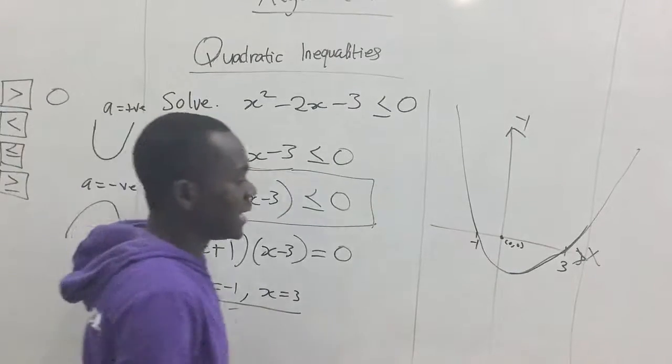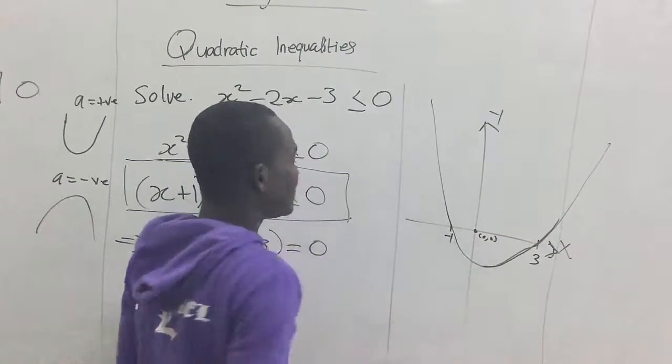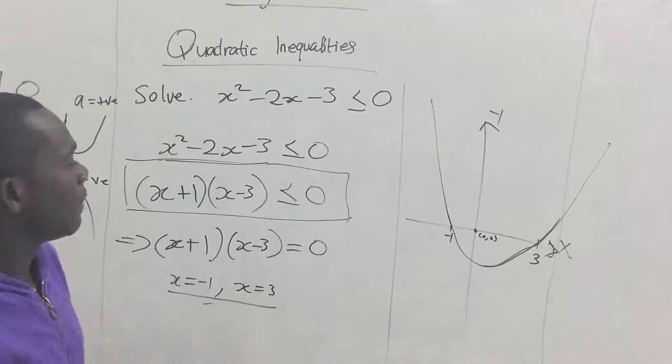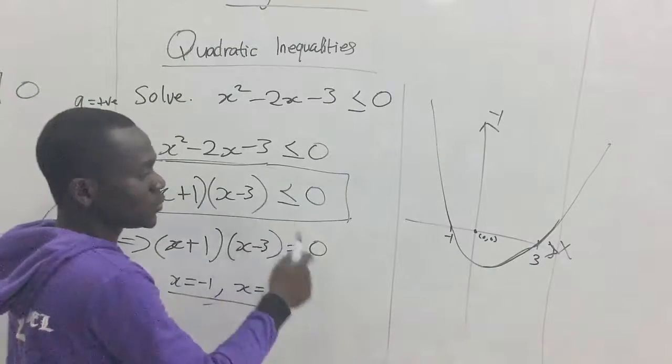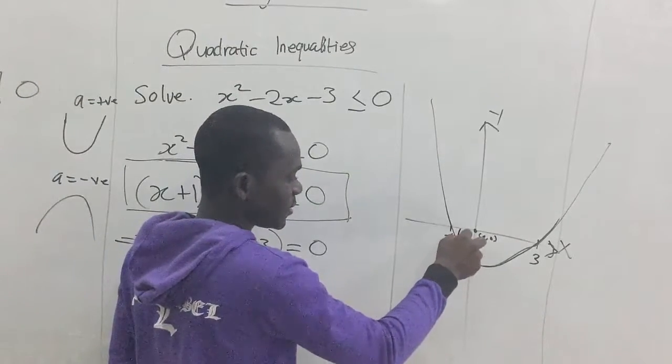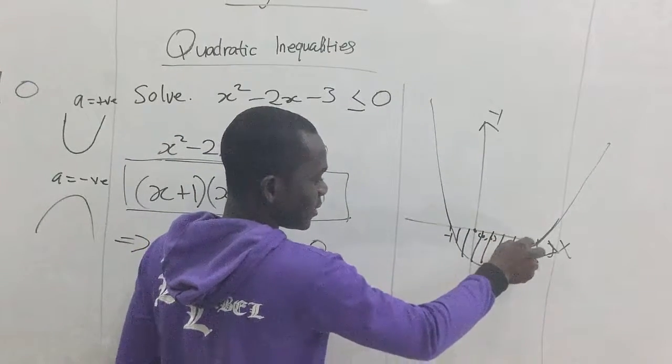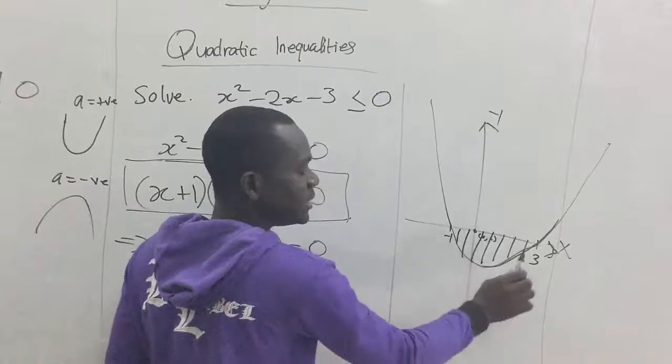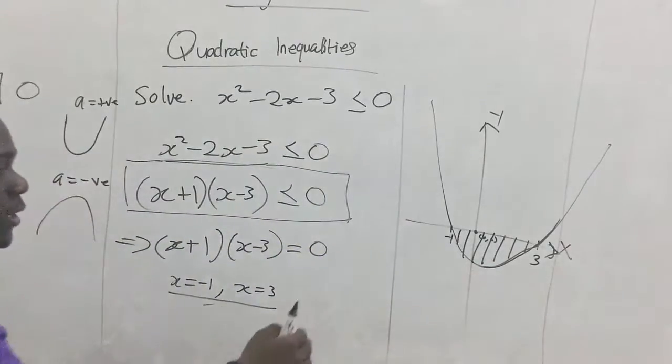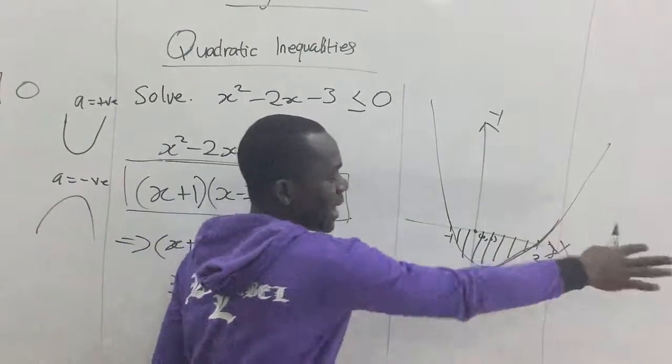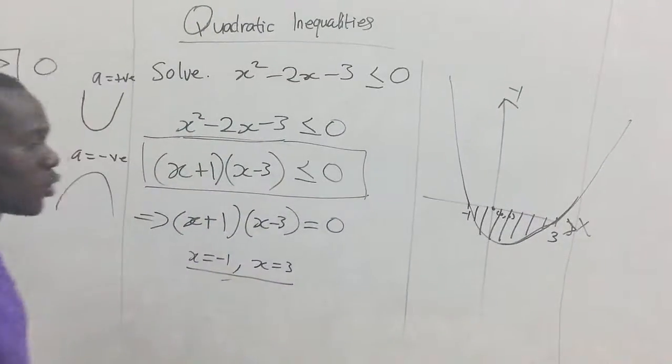So, we can say that the origin satisfies this particular inequality here. So, we shade that region. We show that our solution set is within that particular region. So, we ignore the left-hand side and the right-hand side. The middle is already satisfied.